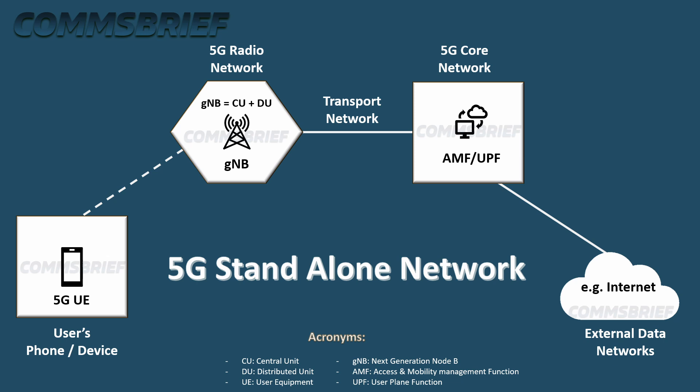The 5G core network consists of several nodes, which we will look at next. Generally, the key nodes representing the 5G core network in most documentation are AMF and UPF. UPF is the user plane function, and AMF is the access and mobility management function.